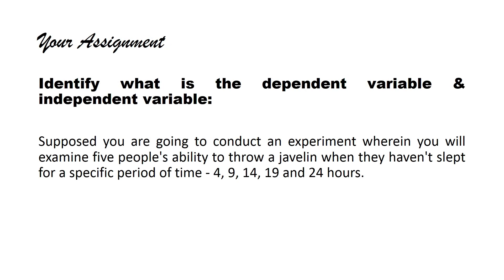And now, I have an assignment for you. If you know the answer, please comment in the comment section of this channel. You are to identify the dependent variable and the independent variable in this situation: Suppose you are going to conduct an experiment where you will examine five people's ability to throw a javelin. They are going to throw a javelin after not having slept for a specific period of time — the first person hasn't slept for 4 hours, the second for 9 hours, then 14 hours, 19 hours, and the fifth has not slept for a full 24 hours. Identify the independent and dependent variables for this experiment. Your answers will all be appreciated.